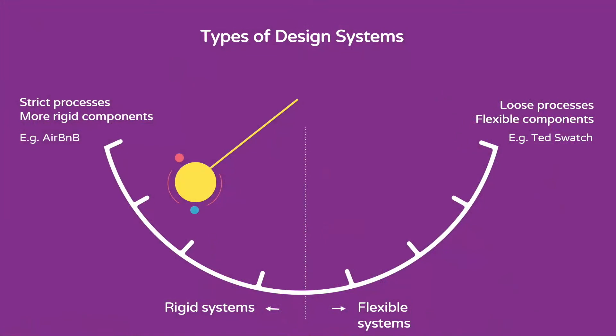Design systems can be measured in different ways, and one way of doing it is through flexibility in processes and also what kind of freedom they provide. Two clear examples of the rigid and the flexible design systems are Airbnb and TED Swatch. Airbnb gives you a strict process of how to use the components, while Swatch allows you to use and extend those as much as you wish. And there is no right or wrong, just different use cases.